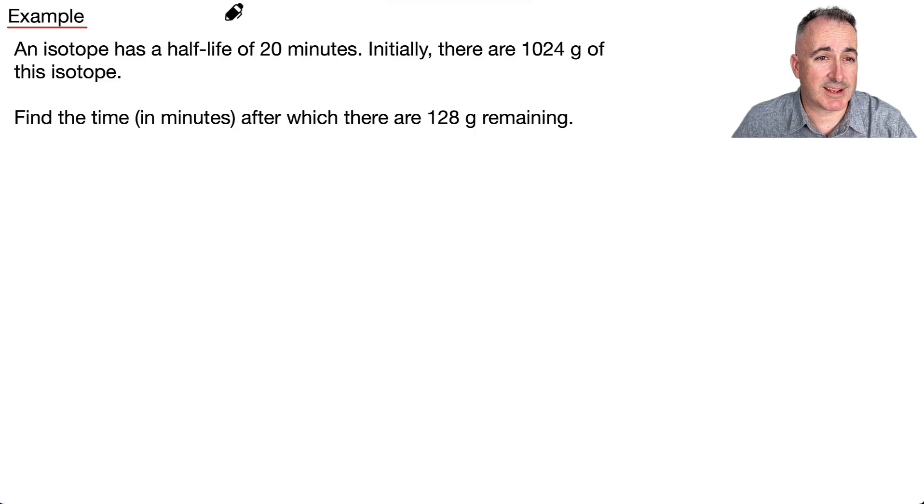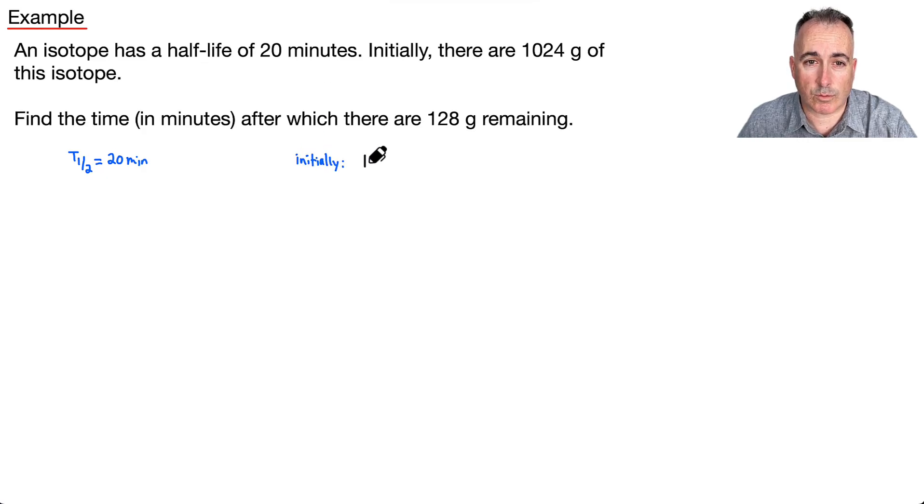We have an isotope that has a half-life of 20 minutes. Initially there's 1,024 grams of this isotope, and we're supposed to find the time after which there's only 128 grams remaining. We can do a similar thing from before. So do we know the half-life? We do. We know the half-life is just equal to 20 minutes. And now we can just start counting the amount that we have and just keep going and count how many half-lives we've had to do. So initially we start off with 1,024 grams.